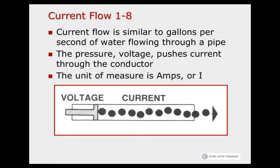When electrons flow through a circuit, that is called current flow, and current flow is similar to gallons per second of water which flows through a pipe. The pressure, or voltage, behind that is what pushes the current through a conductor.